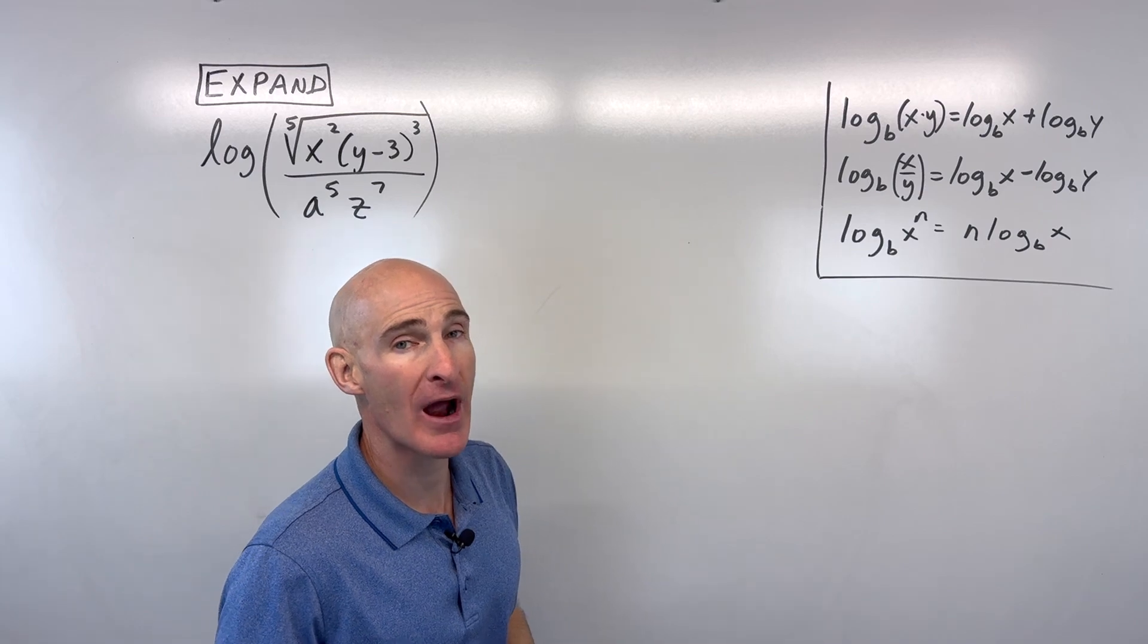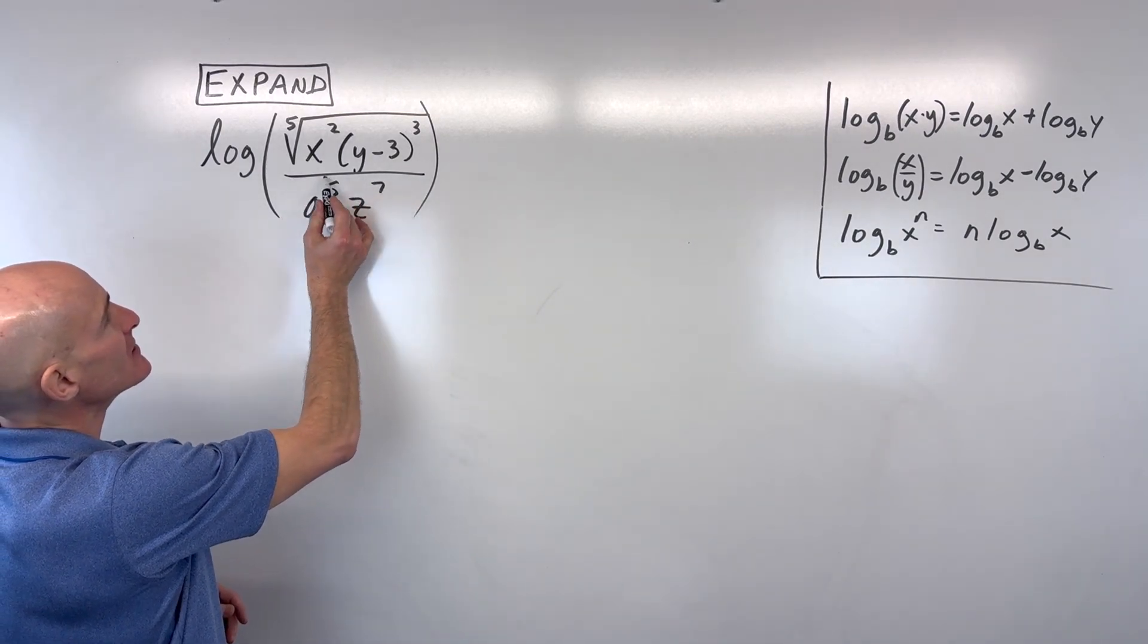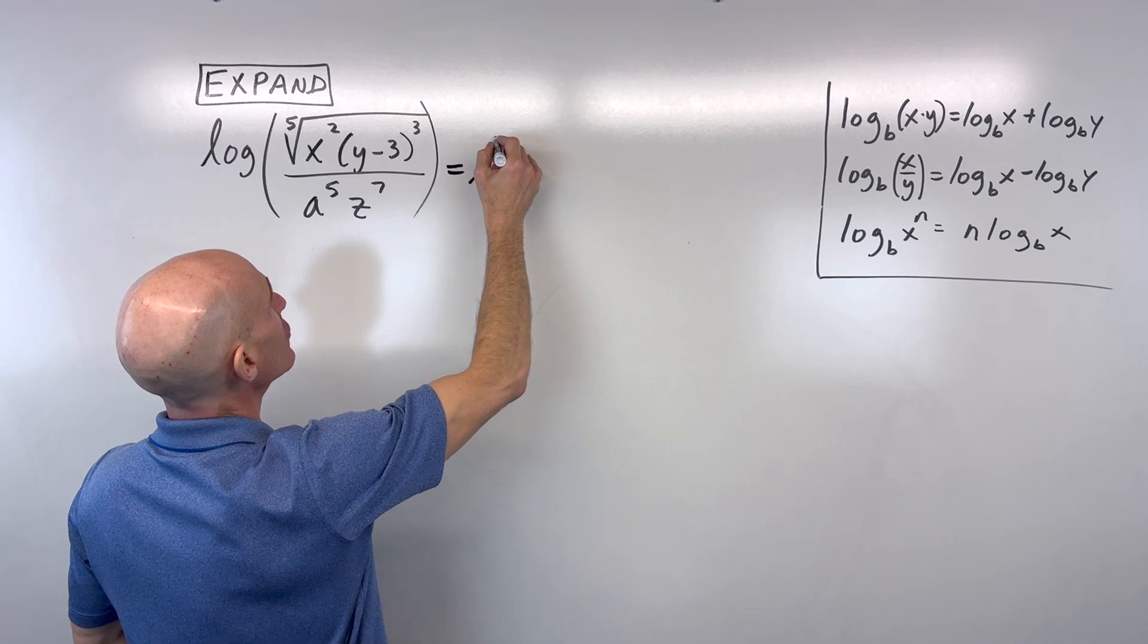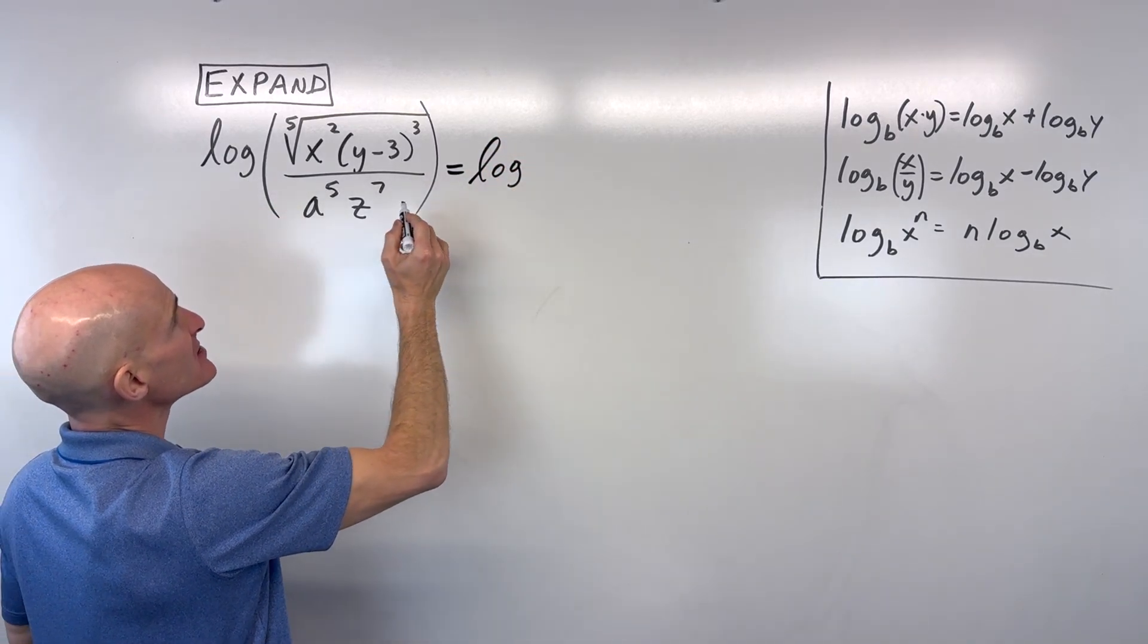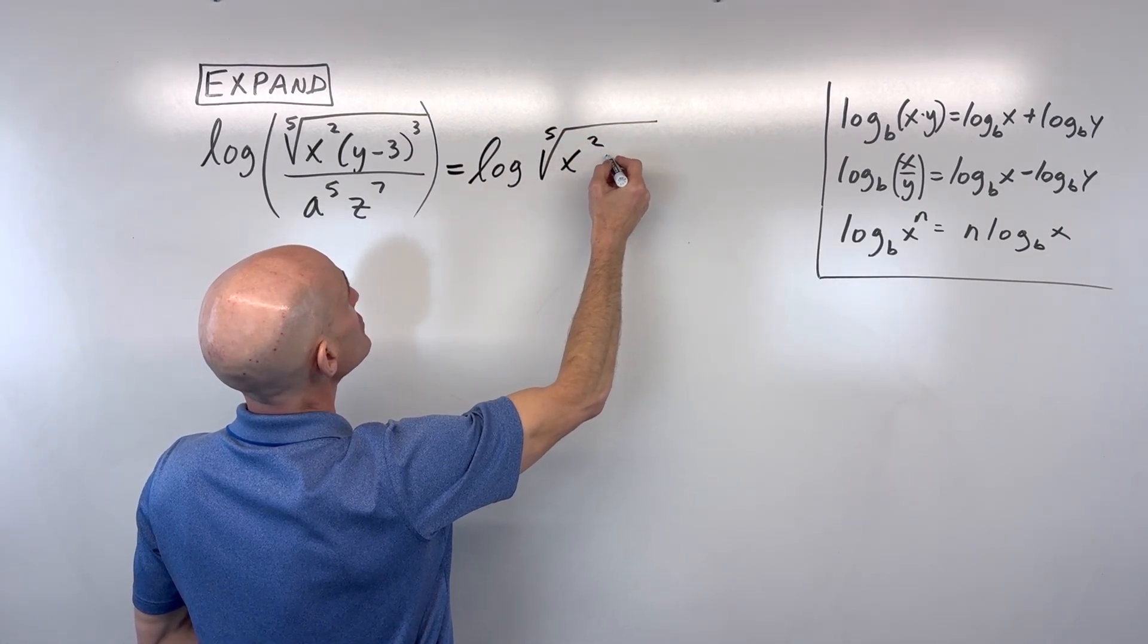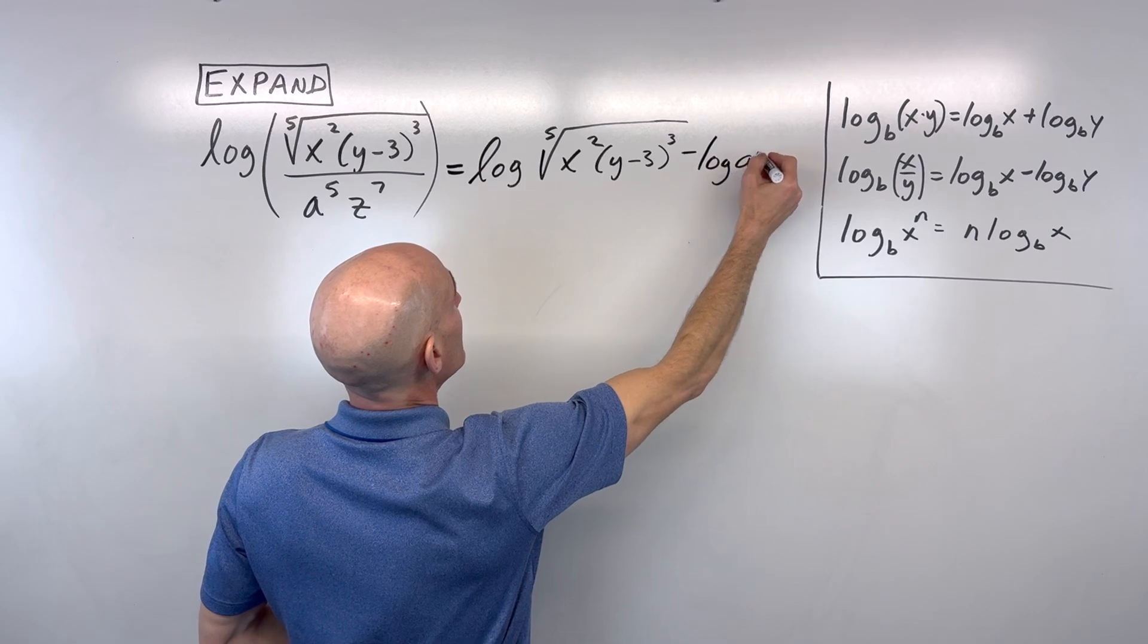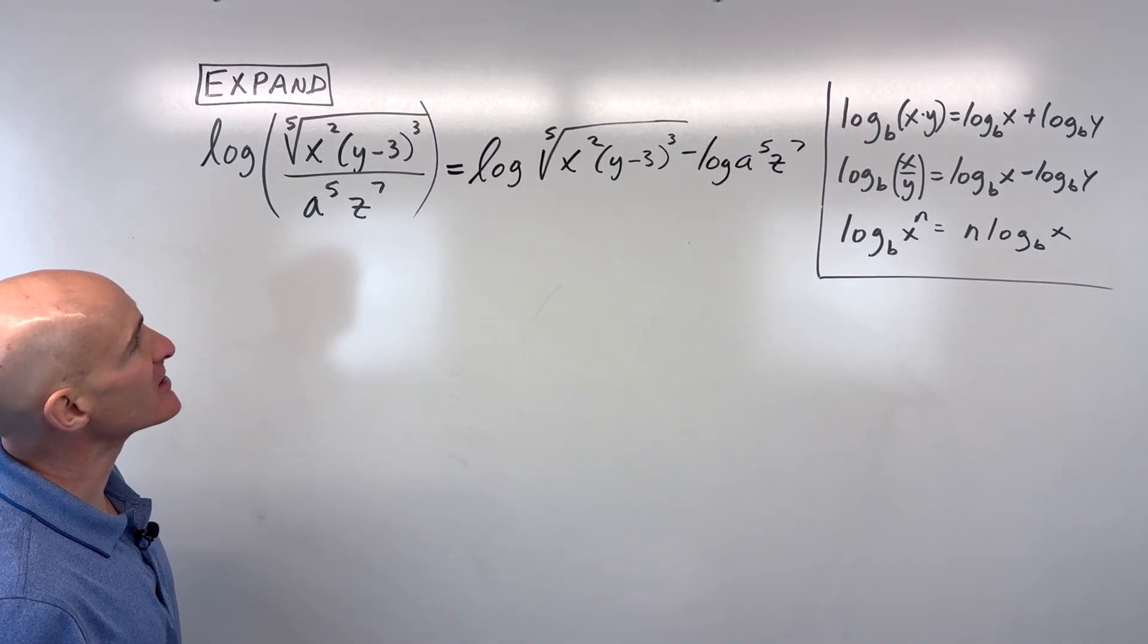So if I was going to do this, I noticed there was a division sign here. We're dividing. That's a quotient. I can write this as a difference. So I'm going to start off by saying log. And remember, if there's not a base, it's understood to be base 10. So this is going to be log of the fifth root of x squared y minus 3 cubed minus log a to the fifth z to the seventh. Okay, so that's our first step.